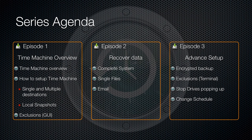In episode one of this series, we'll be looking at an overview of Time Machine, how to set it up, how the local snapshots work, and how to exclude items from your backup. In episode two, we'll look at recovering data — full system recovery, single file recovery, and email recovery.